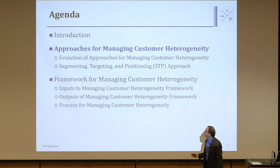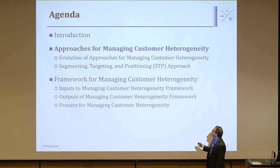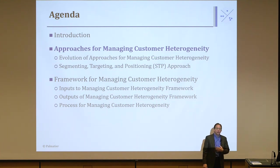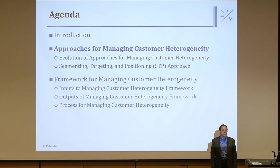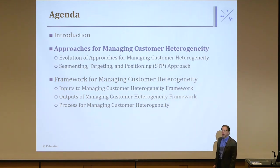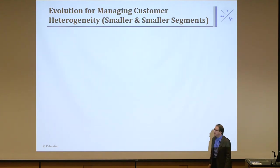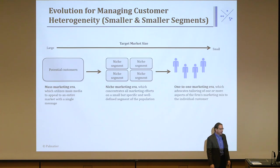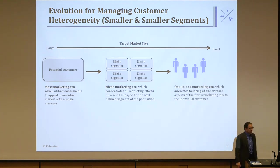What we're going to go through now is the evolution of approaches for dealing with customer heterogeneity — how have marketers trained business people on how to deal with this? And then we're going to go through in detail the STP process: segmentation, targeting, positioning.